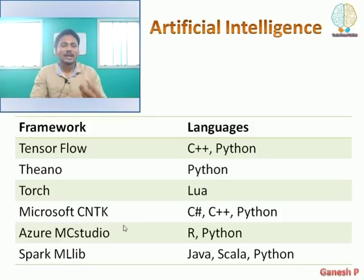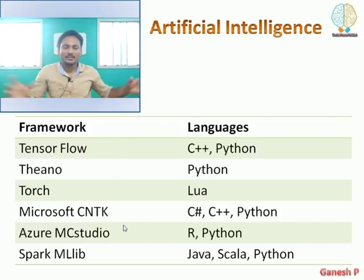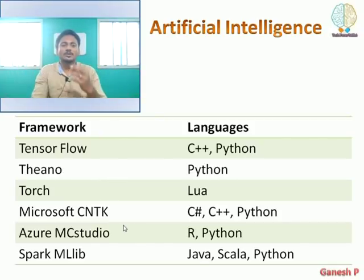Which language should you prefer for AI? C++, Python, MATLAB, and R. These are the common languages you can use to move towards AI. These are the top five technologies of 2019.